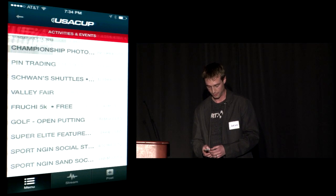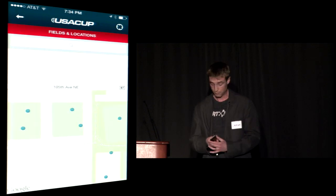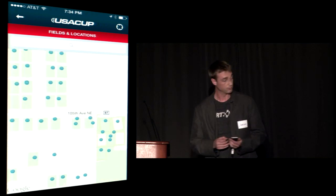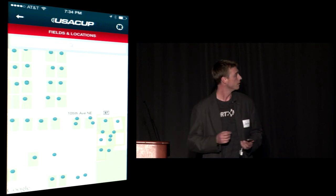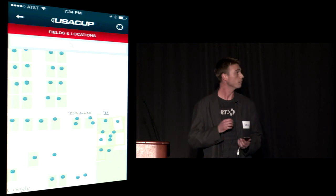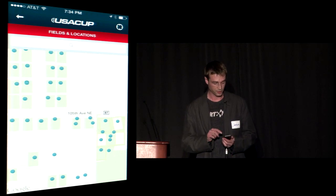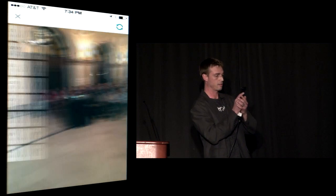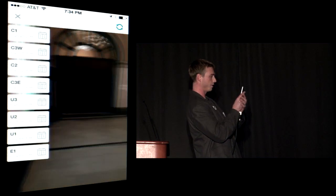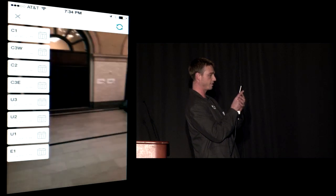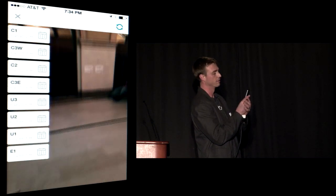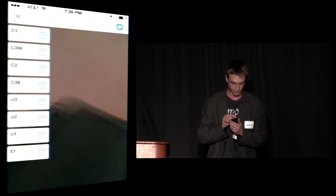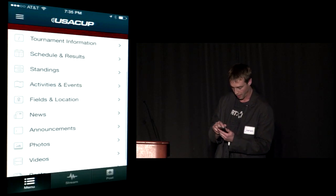Fields and locations was an incredibly useful feature, especially because NSC has 50 fields that people are moving around to and trying to find. One of the things we introduced here was augmented reality. Let's pull up the fields — there we go. C1 is approximately 64,000 feet from here, so if I start walking to my field right now, I might get there by next Tuesday.